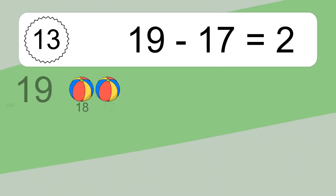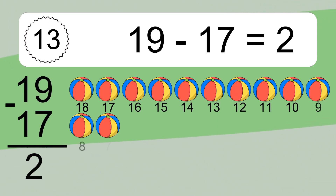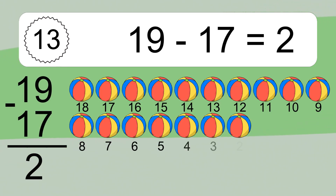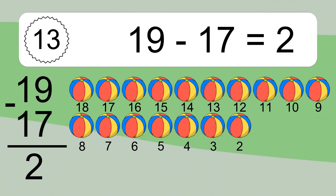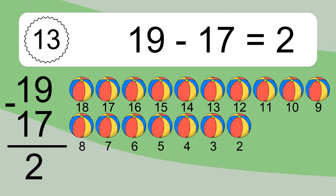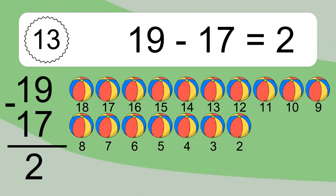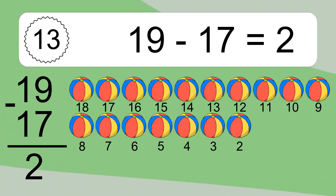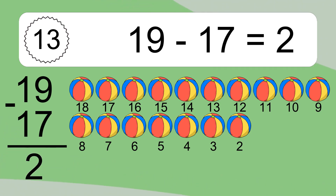19 minus 17 equals what? 19 minus 17 equals 2. Let's count it: 18, 17, 16, 15, 14, 13, 12, 11, 10, 9, 8, 7, 6, 5, 4, 3, 2.